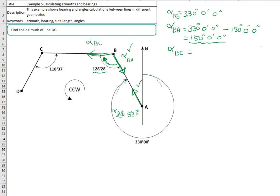Alpha BA is 150, so 150 degrees, 0 minutes, and 0 seconds, plus we are going clockwise by the amount of 128 degrees, 28 minutes, 0 seconds. And this will equal to 278 degrees, 28 minutes, and 0 seconds. So this is alpha BC.